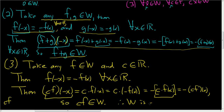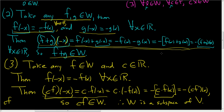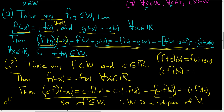The hardest part is really the notation. Keep in mind: f plus g of x is defined to be f of x plus g of x, and cf of x — the scalar product — is c times f of x. You really have to use these definitions carefully in the proof.